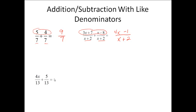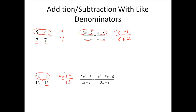Here's one that has the same denominators again — an addition — so we add across the top. My 4x plus 5, I cannot combine those, so I just have to leave it as 4x plus 5. They weren't like terms, so they're just going to be written out like that.